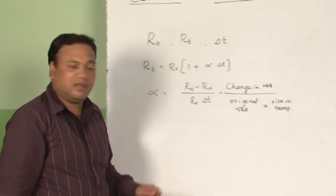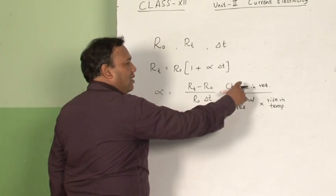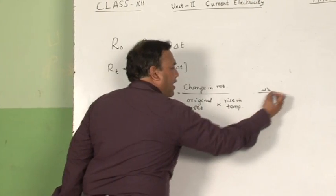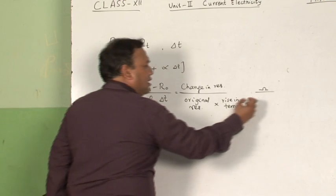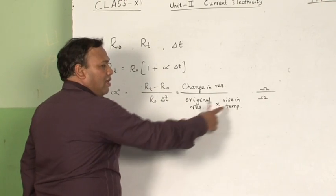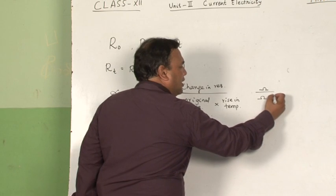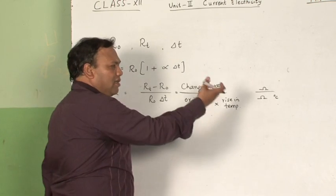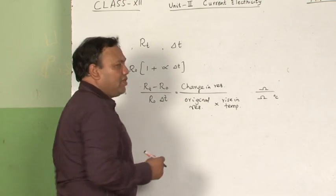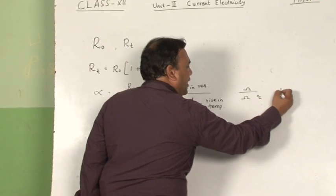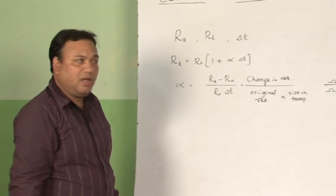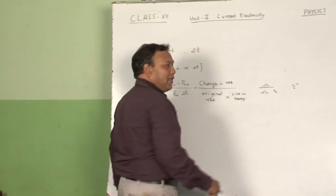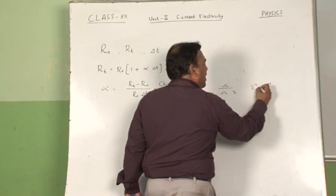The SI unit of alpha: looking at the right-hand side, change in resistance is in ohms divided by original resistance in ohms, so ohm gets cancelled, leaving per degree rise in temperature. Therefore, the unit of alpha is per degree Celsius, or equivalently per Kelvin.